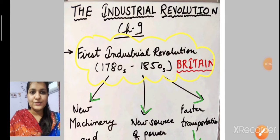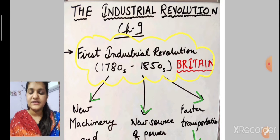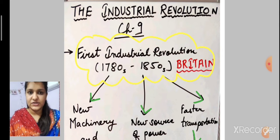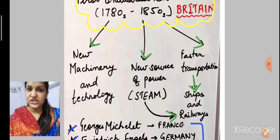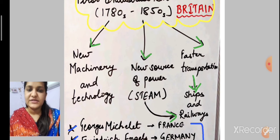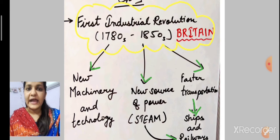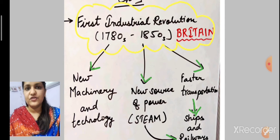Hello students, today we are going to start a new chapter — chapter number 9, the Industrial Revolution. The term 'industrial revolution' is used for the phase from the 1780s to 1850s in Britain, where we see a number of changes: the coming up of new machinery and technology, new sources of power like steam, and transportation becoming faster because of new ships and railways. All this contributed to changes in the economy of Britain and the coming up of various new industries, which is why it is known as the Industrial Revolution.